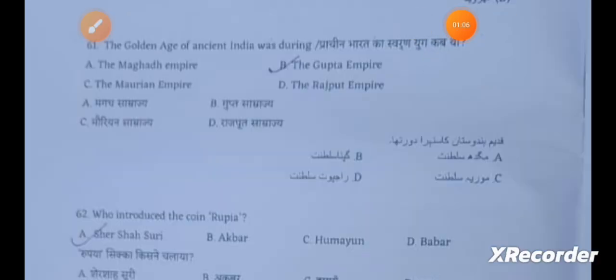The golden age of ancient India was during the Gupta Empire. Who introduced the coin rupiah? The answer is Sher Shah Suri.